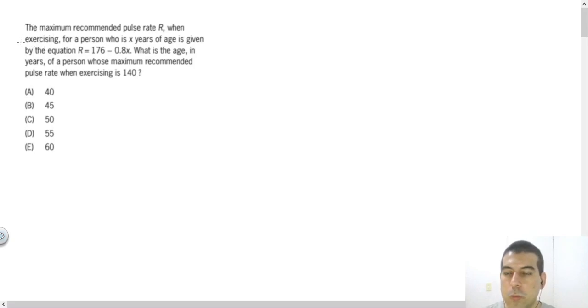The first one: the maximum recommended pulse rate R when exercising for a person who is x years of age is given by the equation R equals 176 minus 0.8x. And the question asks, what is the age in years of a person whose maximum recommended pulse rate when exercising is 140?